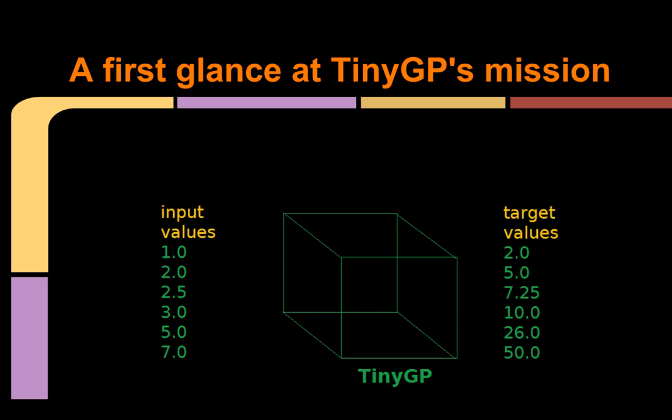So then, what task is TinyGP seeking to perform? Let's think of TinyGP as a box. On the left side of this box, we have a set of numbers, which represent the input values for TinyGP. And on the right side of the box, we have a set of target values, which represent the desired output for the given inputs.